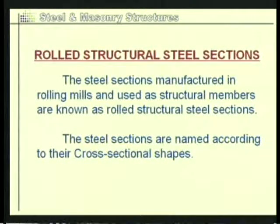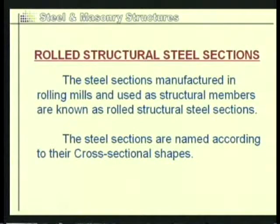Once we know the types of steel generally used, let us go to the general types of sections that are mostly used — these are called rolled steel sections. A rolled steel section is a section which is manufactured in rolling mills and used for structural members. These sections are named according to their cross-sectional shapes.